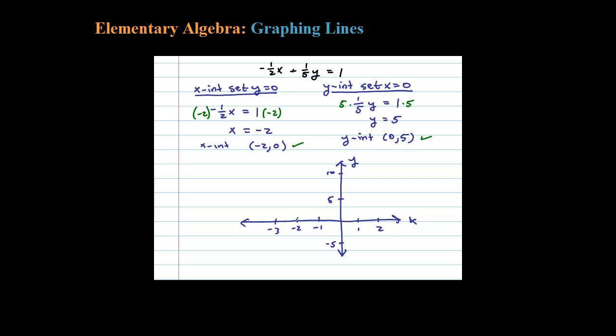Let's see - negative 2 comma 0, 0 comma 5 is the y-intercept. Two points to determine a line. Use a straight edge, connect the dots. So this is the graph of the line negative one-half x plus one-fifth y equals 1.